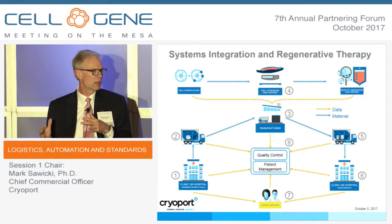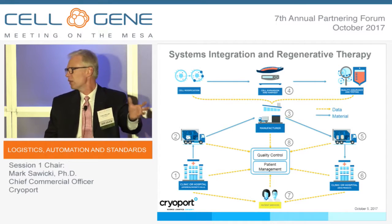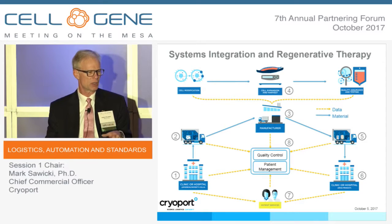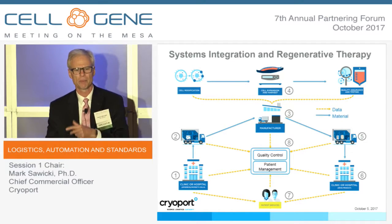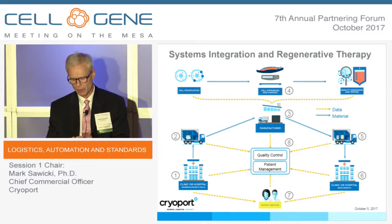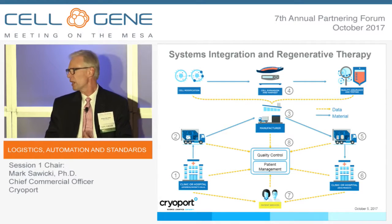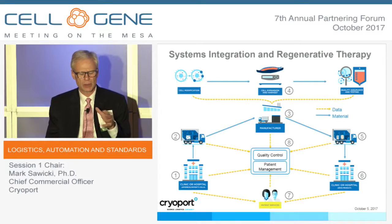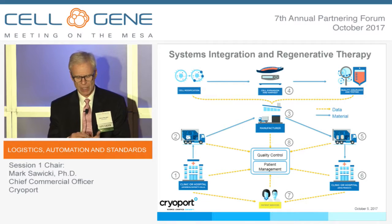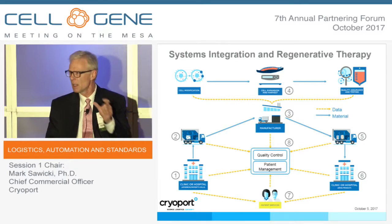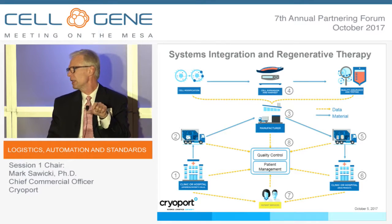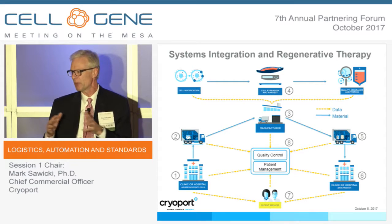Everything on this flow chart ties into that — from logistics to treatment to how things are stored. If you look at the diversity of therapies from cell and gene therapy and how they're administered, frozen, and stored, there's a tremendous diversity coming out of this. Where are they going to be stored? Hospital, outpatient, separate clinics? All the logistics that fit that treatment modality and site of care — we really have to be able to make that work.